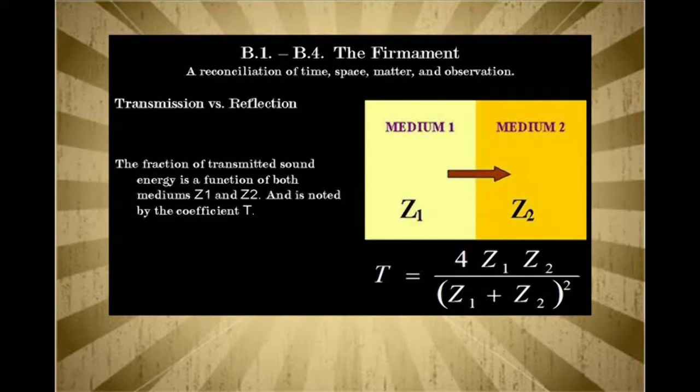Transmission versus reflection. The fraction of transmitted sound, or the part of the sound that enters the second medium of sound energy, is a function of both mediums, Z1 and Z2, and is noted by the coefficient T. All right, that looks very complicated, but it's very simple. So, basically, T equals the amount that is transmitted from this first medium into the second medium. Transmission.